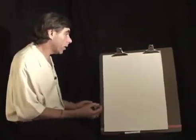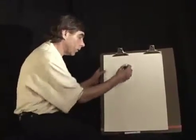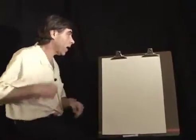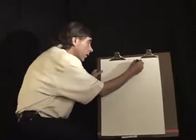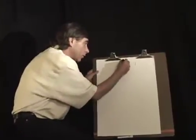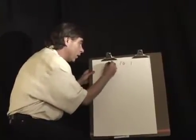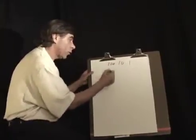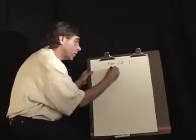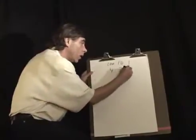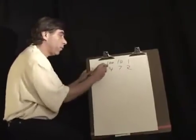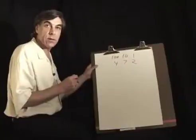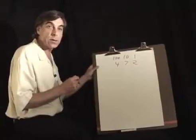Today, when we write a number, we work in powers of 10 and place value. We have the ones, the tens, the hundreds columns. So if you wanted to say 472, we're really saying four one-hundreds, seven tens, plus two ones.